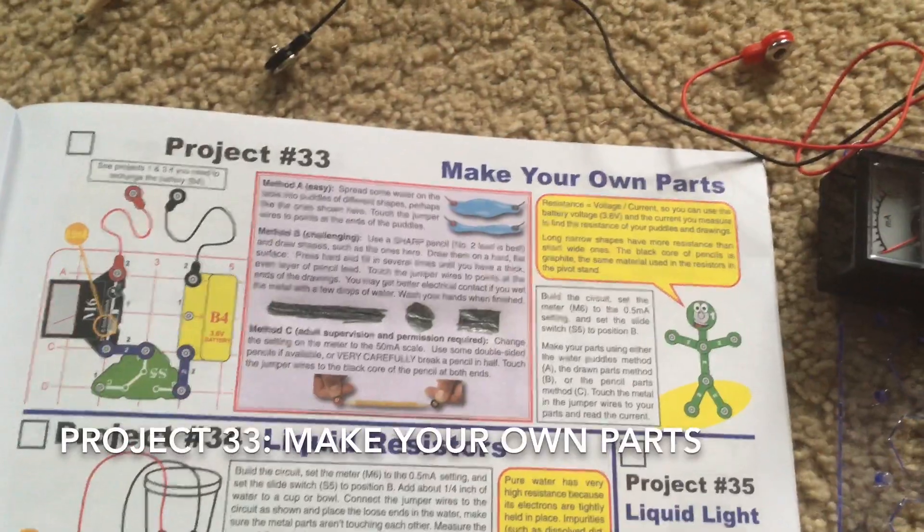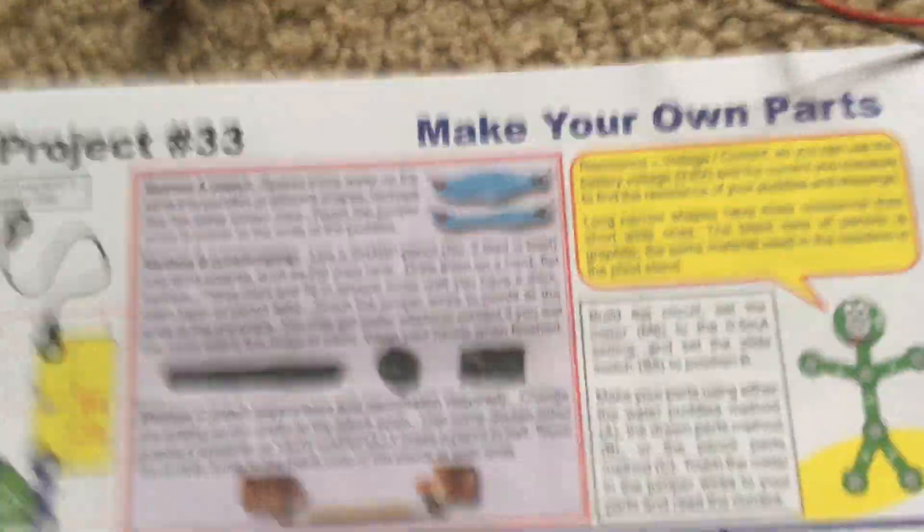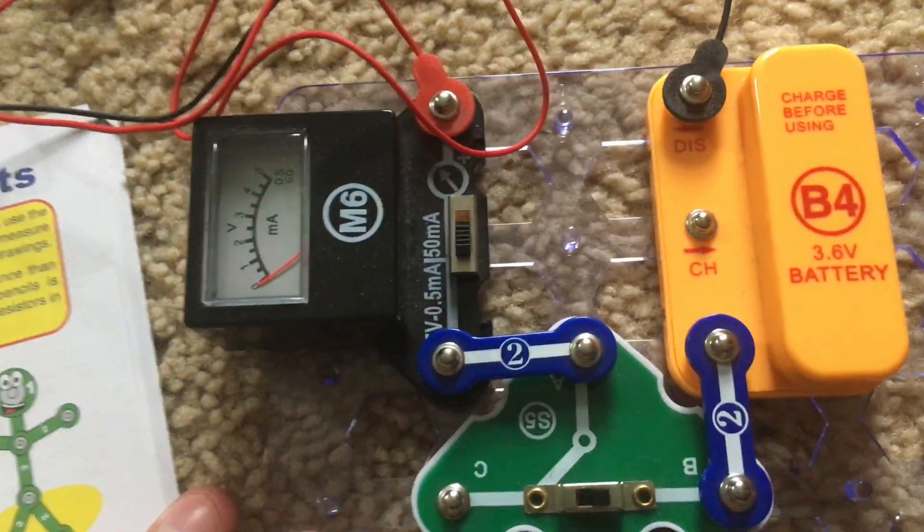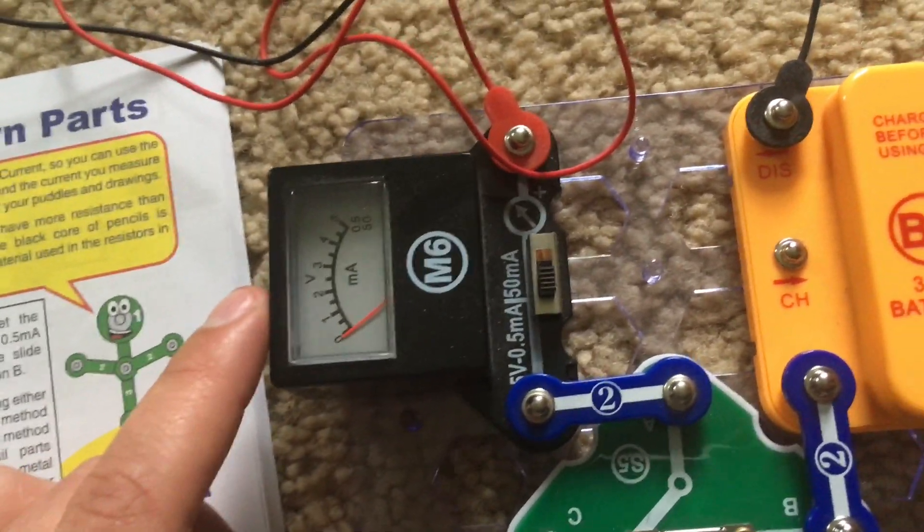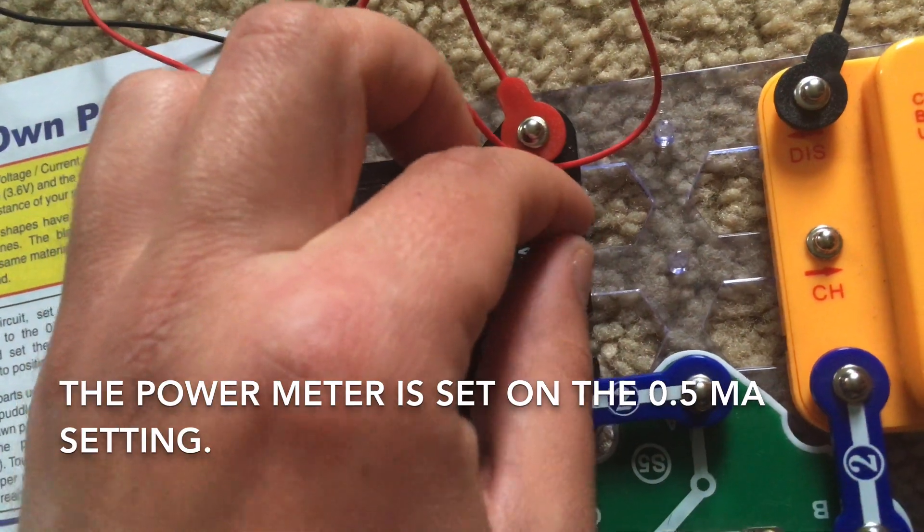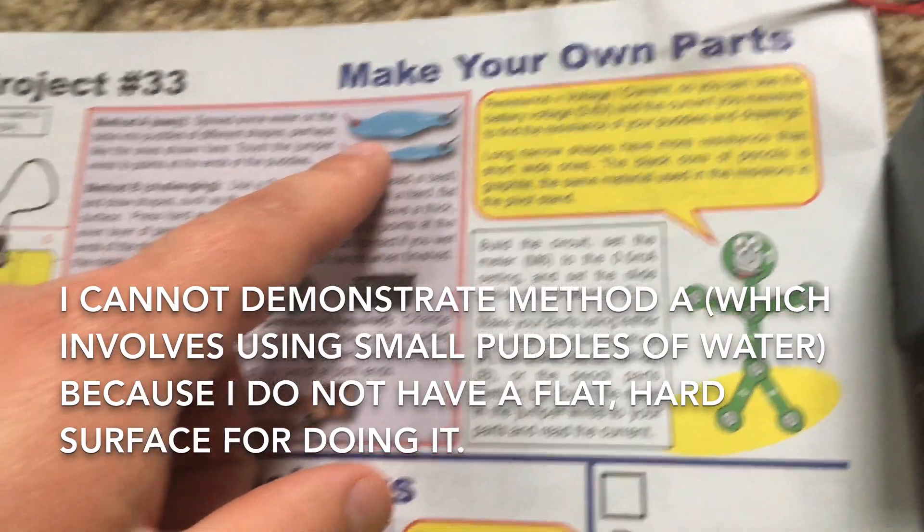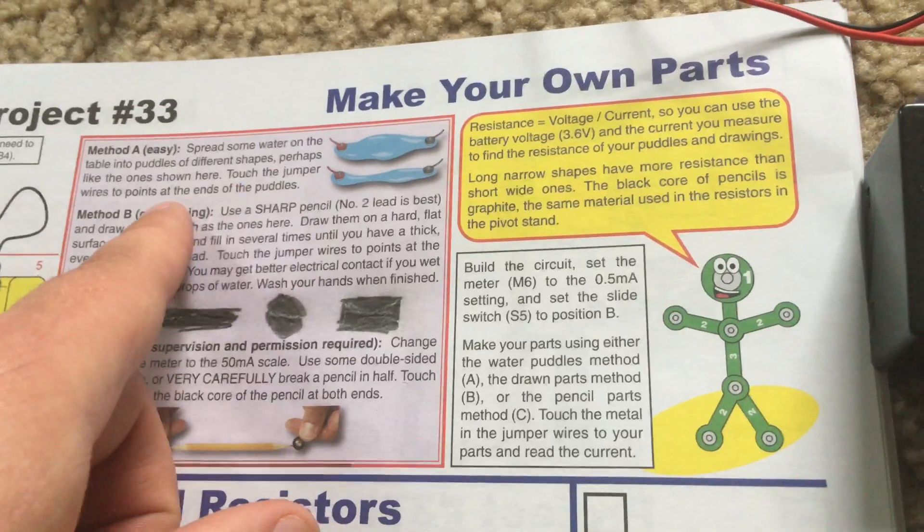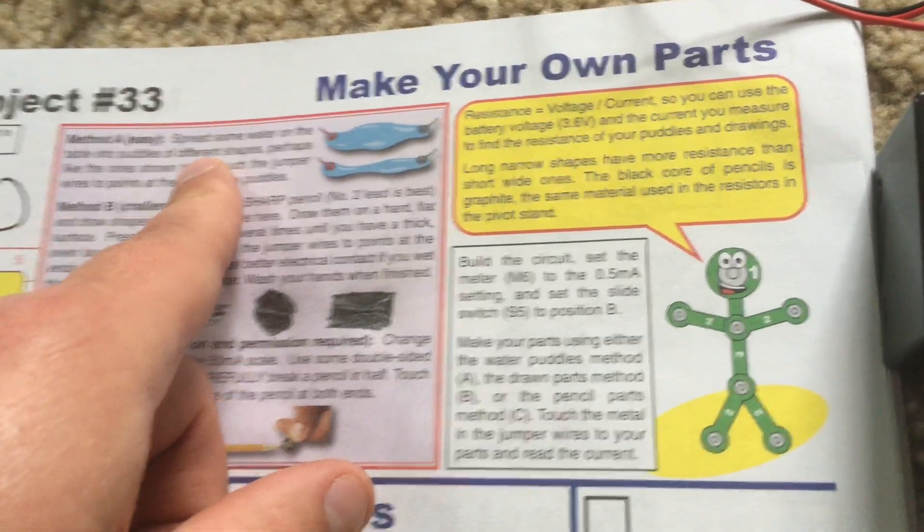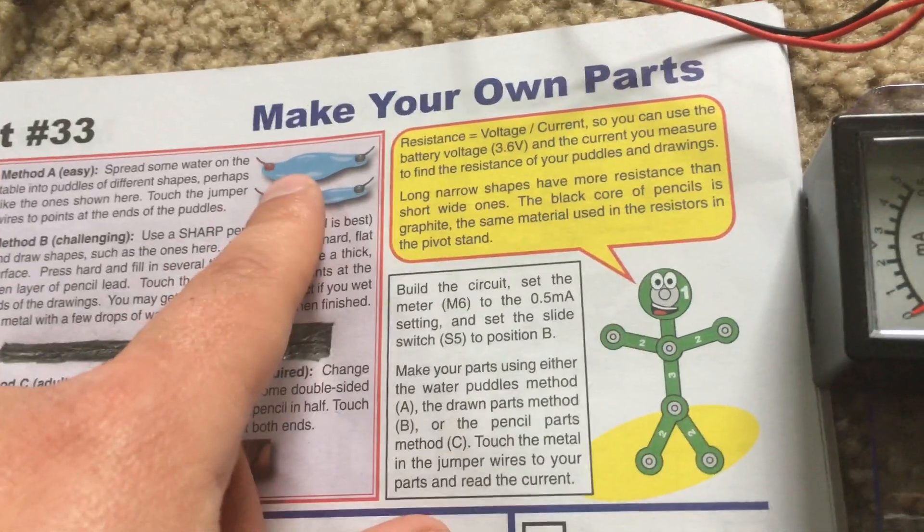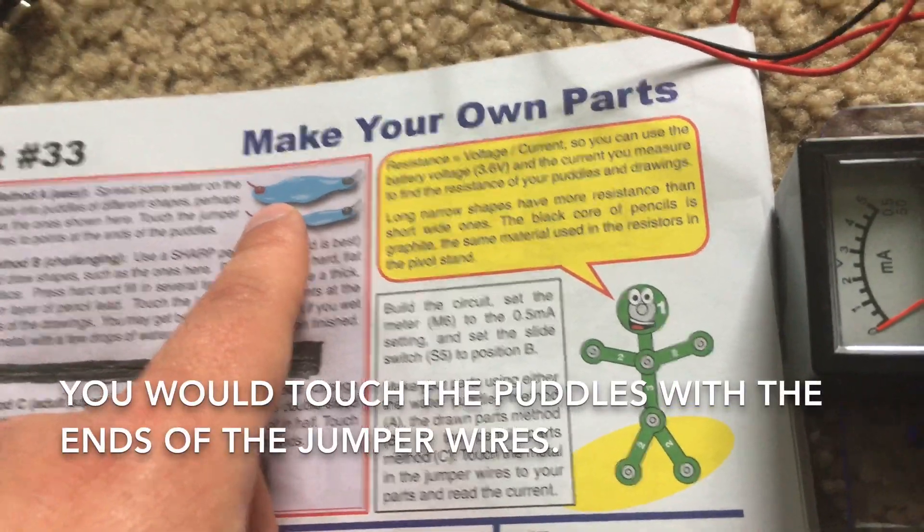For project 33, make your own parts, I am going to demonstrate a couple different makeshift conductors for this circuit, which includes the power meter. The power meter is set on the 50 milliamp setting and the slide switch is in the B position. For method A, you have to spread a little bit of water into small puddles of different shapes on a flat surface like a table. But I don't have a hard surface with me right now, so I have to move to method B. You would touch the ends of the puddles with the jumper wires.